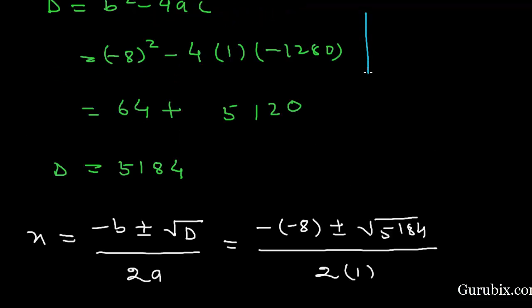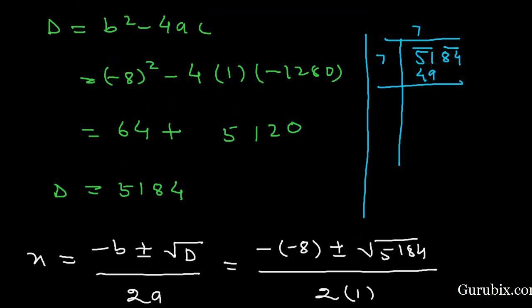Now we shall find the square root of 5184 by using long division method. For that we shall make pairs from left to right and find a number whose multiplication with itself is less than or equal to 51. Then we find 7. 7 times 7 is 49. We subtract 49 from 51. Then we have 2, and we shall bring down this 84. Then it will be 284. We shall add 7 with 7, then we have 14.